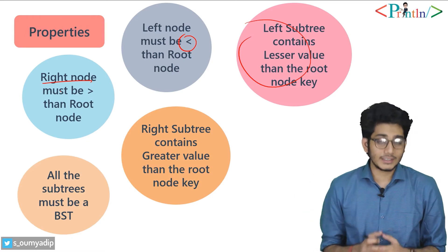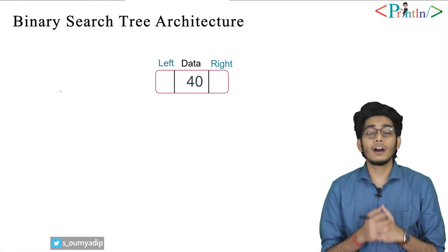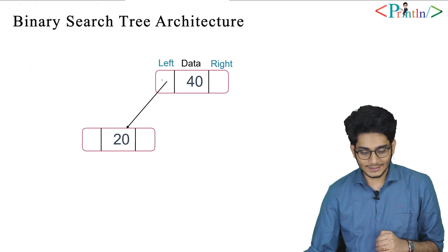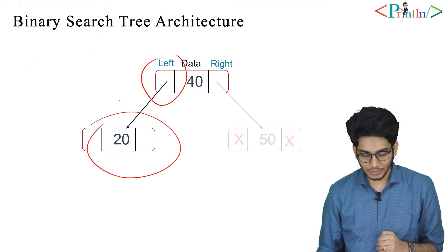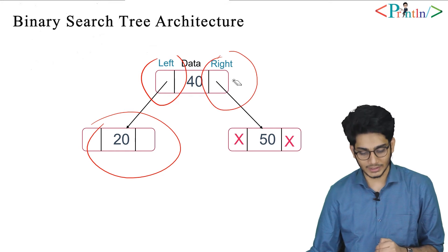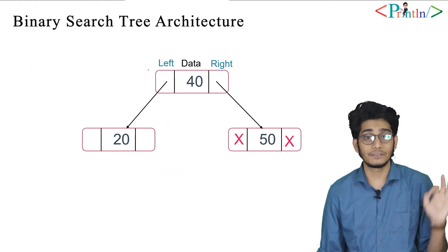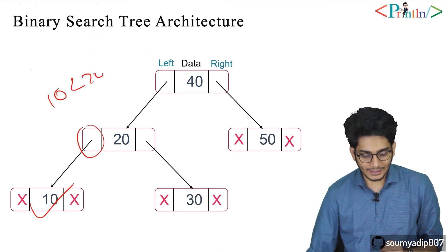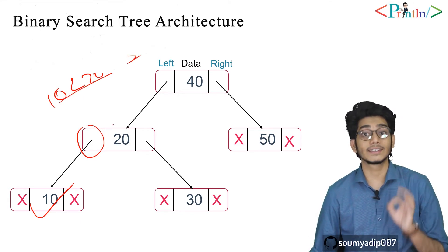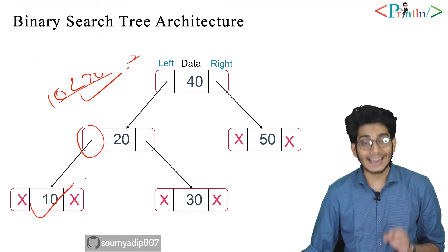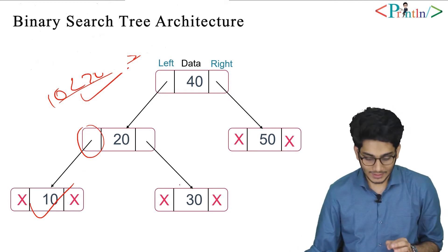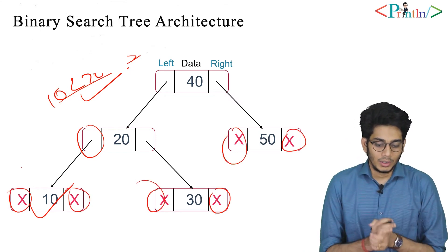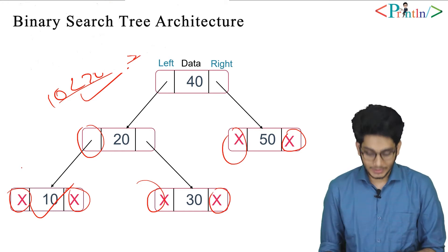Now we'll see how we can create a binary search tree and what is its architecture. In the left-hand portion we have lesser values and in the right-hand portion we have greater values — for example, 50 is greater than 40 and 20 is less than 50. At the left node we have 10, which is less than 20, and on the right side we have 30, which is greater than 20. The remaining are null values. This is how we construct a binary search tree.